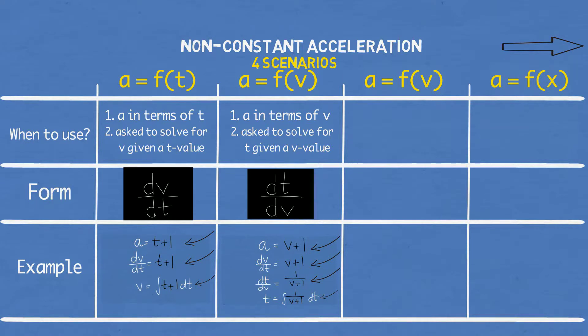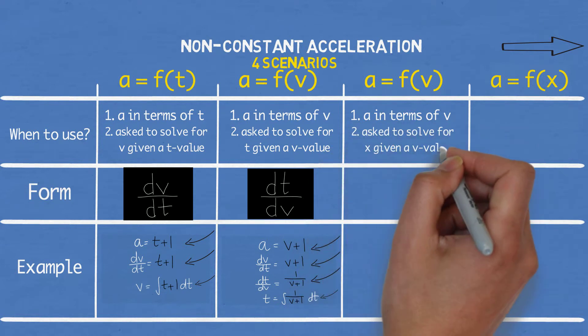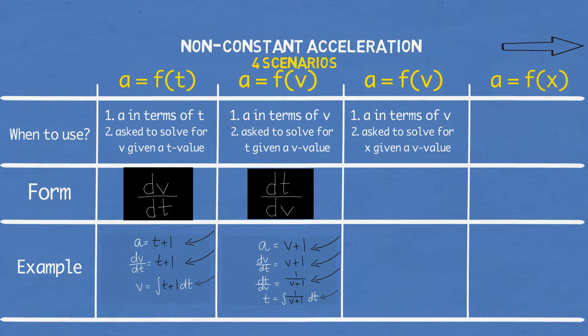Alright, on to the third case. You use this when you are given acceleration in terms of velocity and you are asked to solve for displacement for a given velocity value. Unlike the previous two scenarios, there is no mention of time here so we cannot use v dt or t dv at all. Instead, we use a different formula and that's acceleration equals v times dv dx.